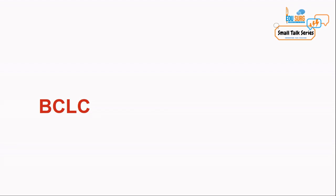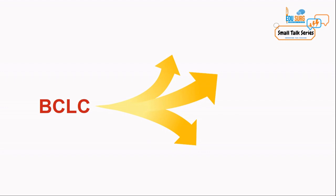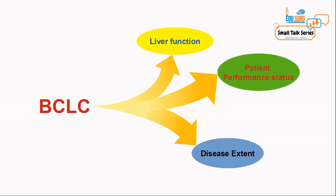That is the video which showed you how to assess a patient of HCC. So if you have not seen that video, kindly see it again. As we discussed in that video, the BCLC uses the same method to classify the patient of HCC for different treatment options. BCLC relies on the liver function, patient performance status, and the disease extent — these are the three factors that determine the BCLC stage and the designated treatment.